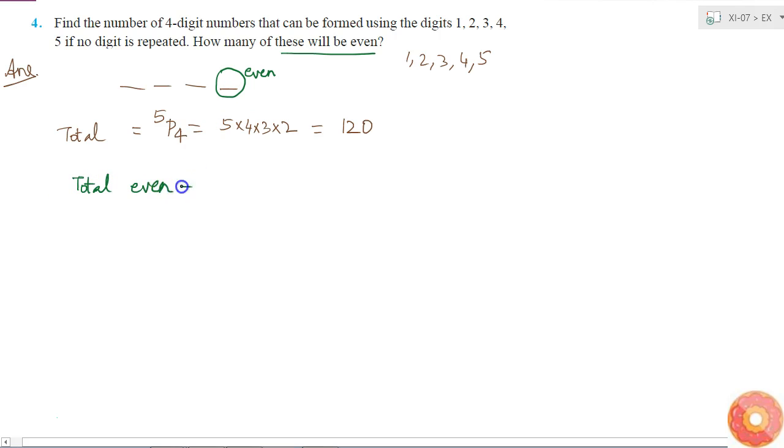Then that will be equal to... if I try to count them one by one, it will be very lengthy. So I will just see what are the different digits I can keep here so that the number will be even. So I can keep either 2 or 4. That means I can fill this blank in two ways.